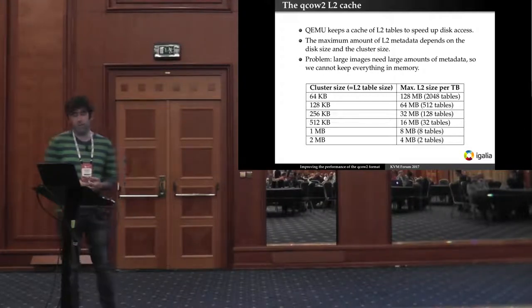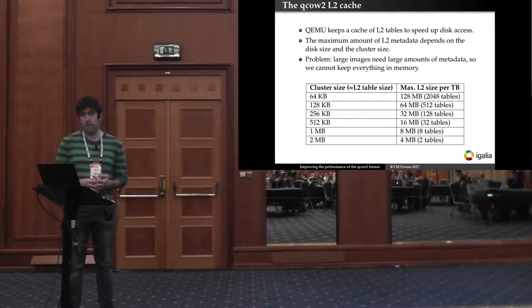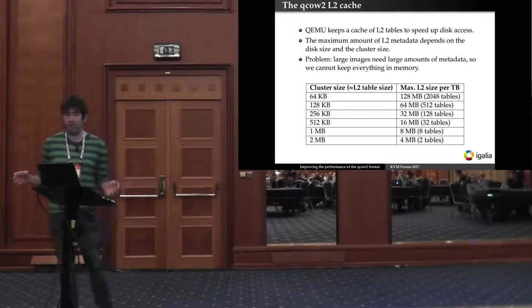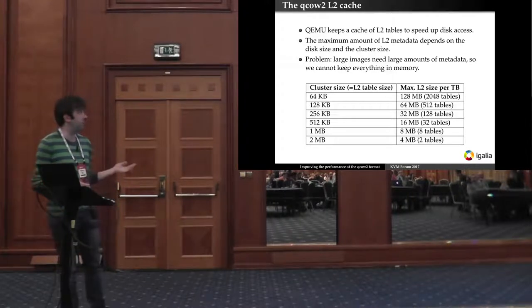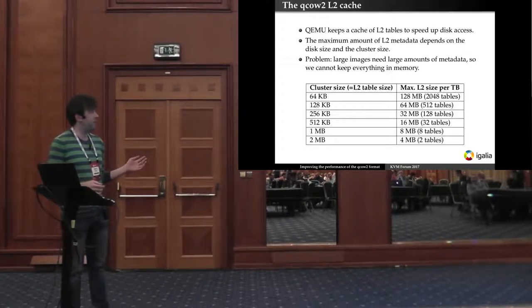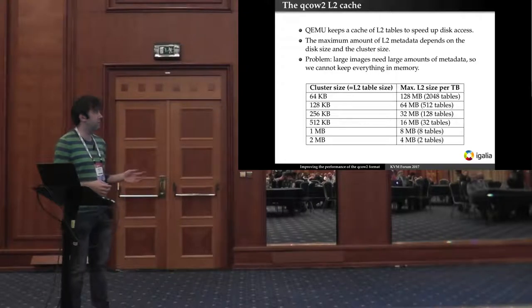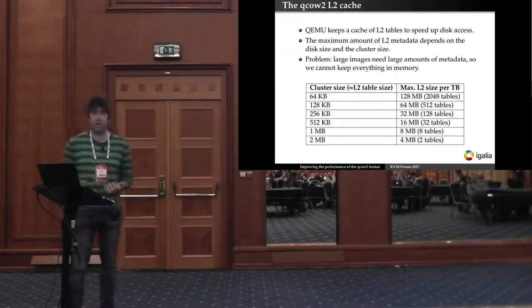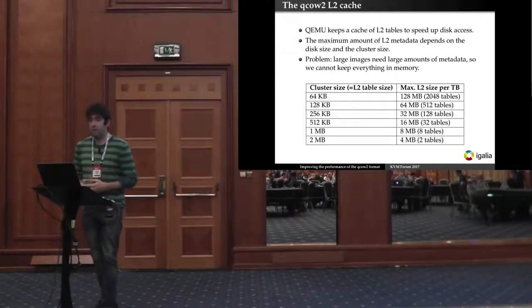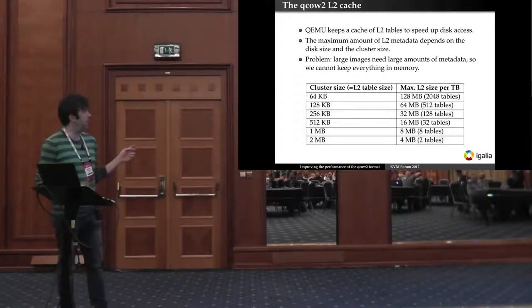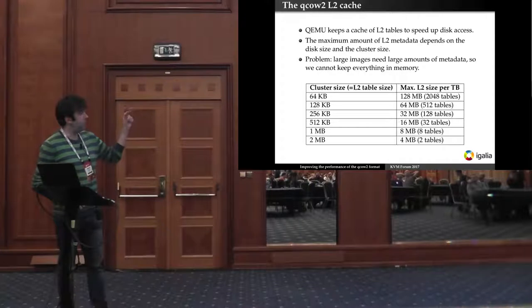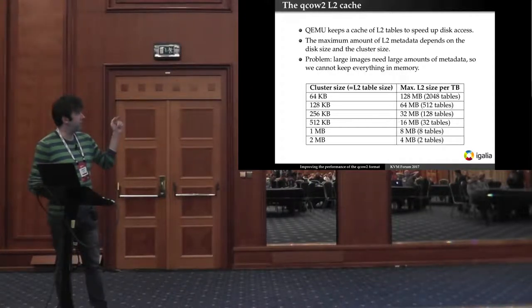QCOW2 has a QCOW2 cache for the L2 tables and that can be used to speed up disk access. The size of the metadata depends on the cluster size and on the image size. So for one terabyte disk image we can see how much L2 metadata we need for each type of cluster size.